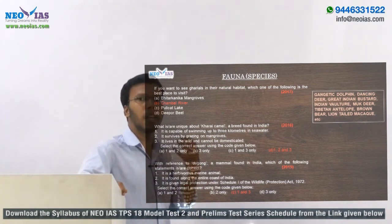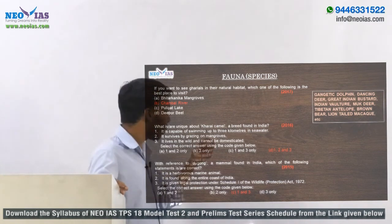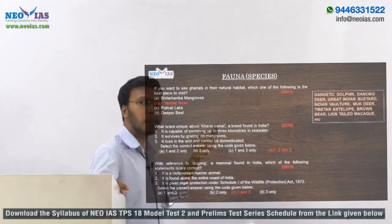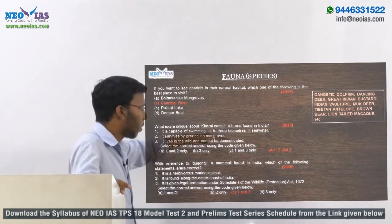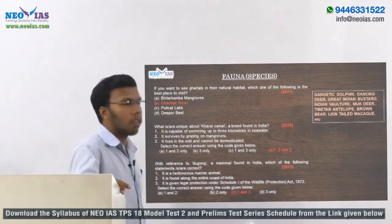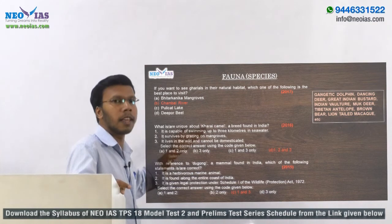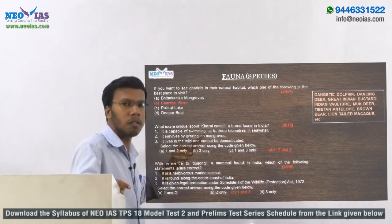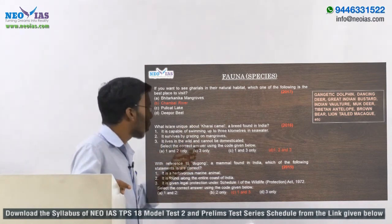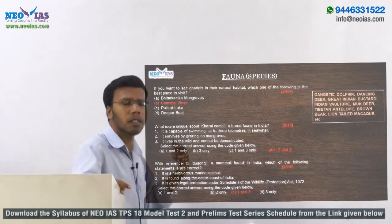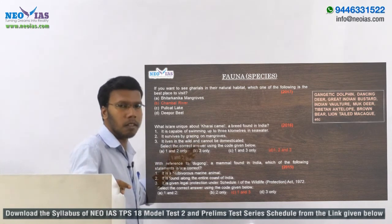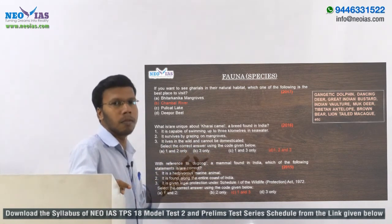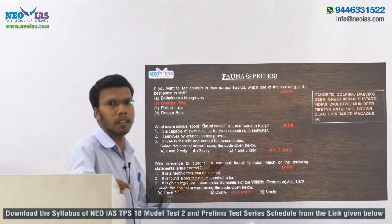We need to know the main threatened and endemic species in India. Another question pattern gives the name of an animal and its main features or characteristics. For example, the Kharai camel — it is the only camel capable of swimming and feeds on mangrove forests. Instead of the Kharai camel, they may ask about the Sangai deer, which is only found in Loktak Lake and feeds on Phumdi vegetation.